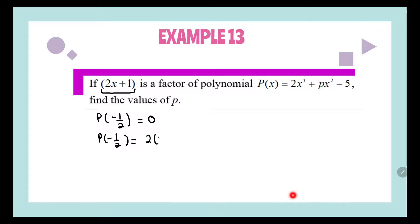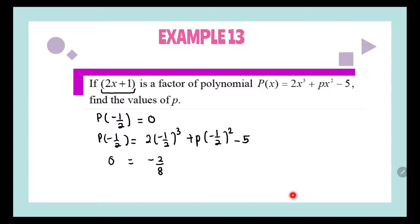This will become 2 times (−1/2)³ plus P times (−1/2)² minus 5. We know P(−1/2) = 0, and 2 times (−1/2)³ gives us −2/8. So P times (−1/2)² gives us P/4, minus 5.